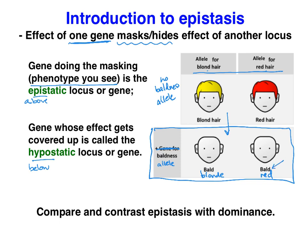The only phenotype we can see is baldness. So the baldness allele, or the baldness gene, is epistatic to the hair color gene, which is hypostatic.